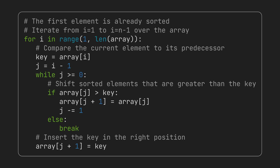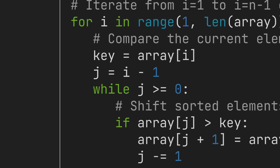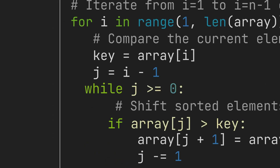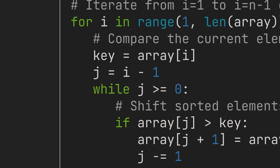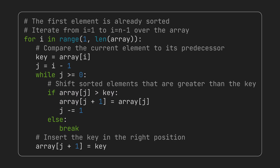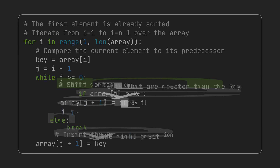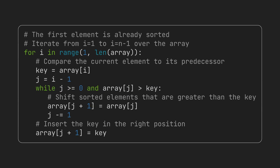If it doesn't make sense, don't worry — we will see it run on an array in a moment. But before that, let's see if we can rewrite this code with fewer lines. We can combine the internal loop and the if conditions together and come up with a new one-liner condition. It looks better, doesn't it?